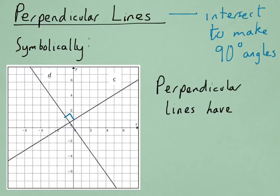So, symbolically, we represent this as line C is perpendicular to line D. This symbol right here indicates that they are perpendicular. Let's see what we can observe about the slopes of perpendicular lines.